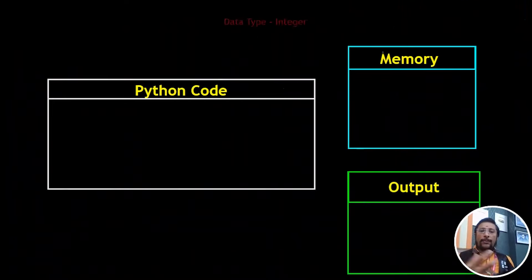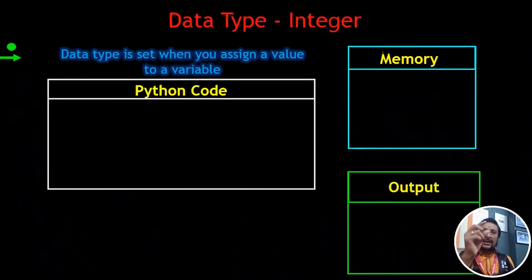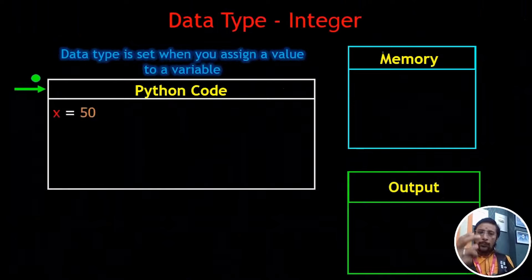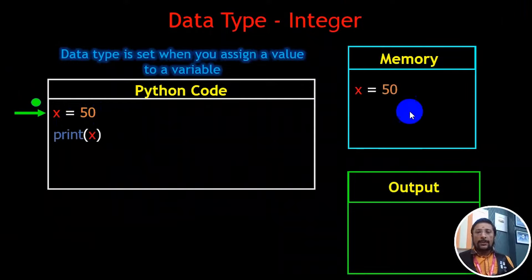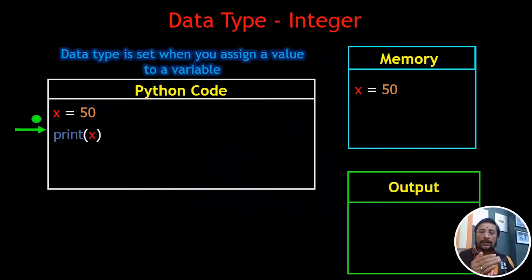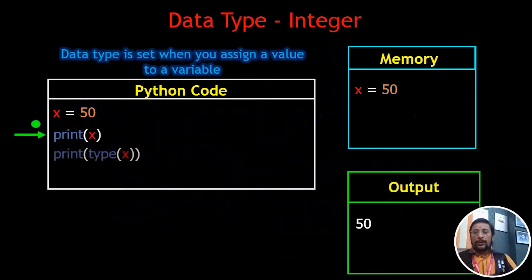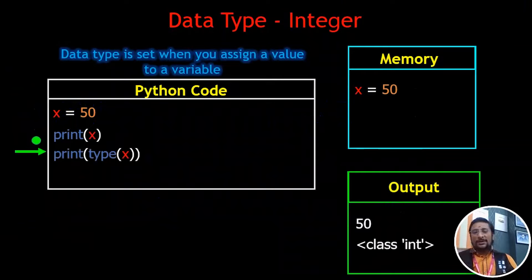Now, we will talk about the Integer data type. There are 20 or 30 days — how do you store this data? You can store this data in the XN variable. In the memory, there are 50. If you print XN, you will automatically print it. We will print the data type using the type() method. This is the Integer.